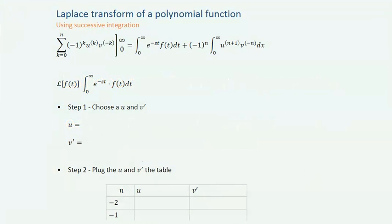Let's use successive integration to do a Laplace transform of a polynomial. The successive integration formula now has bounds from 0 to infinity. e^(-st) is our g(x), and that's going to be a constant. Our function here is f(t) dt. We're going to use the same method as before, choosing u and v based on our f(t) function.